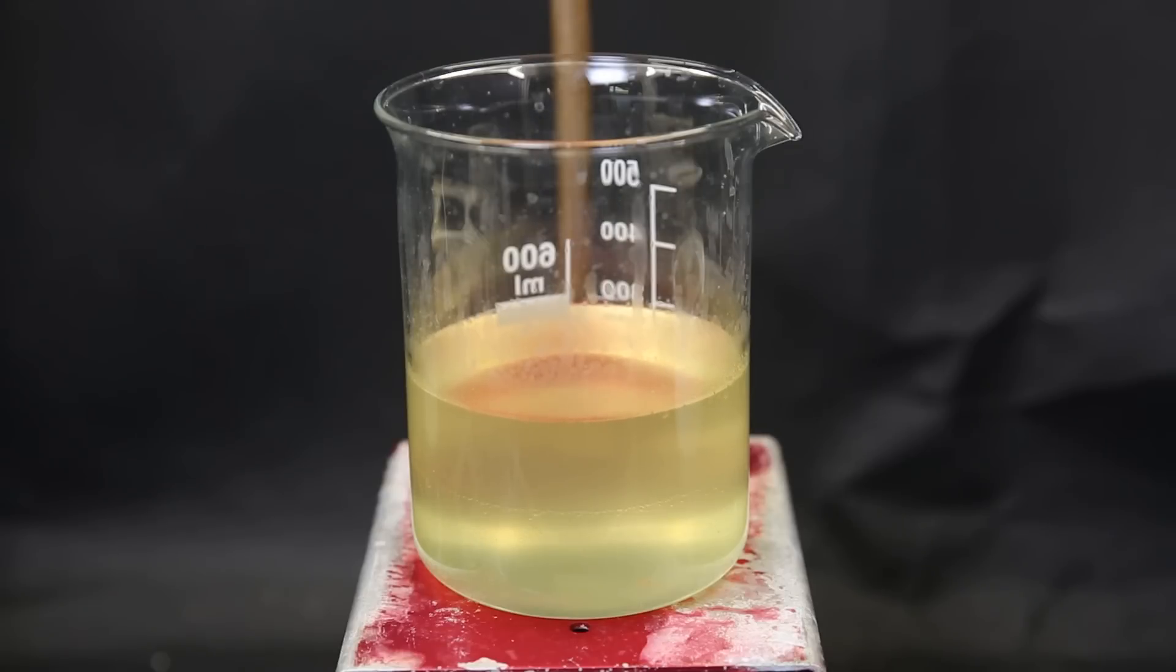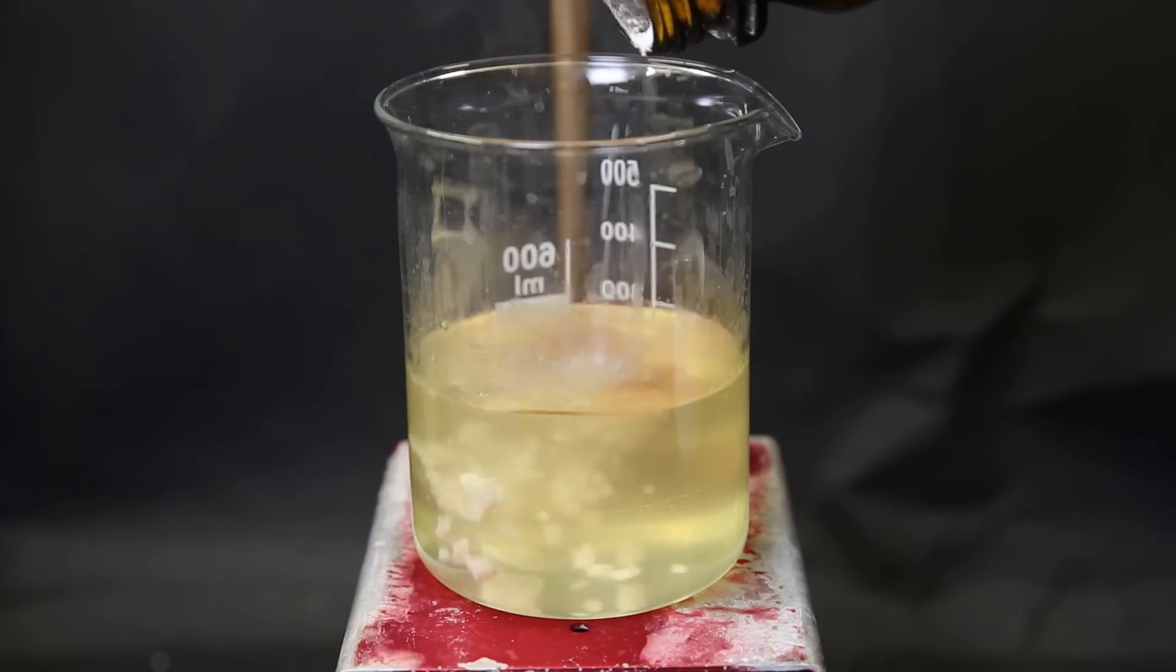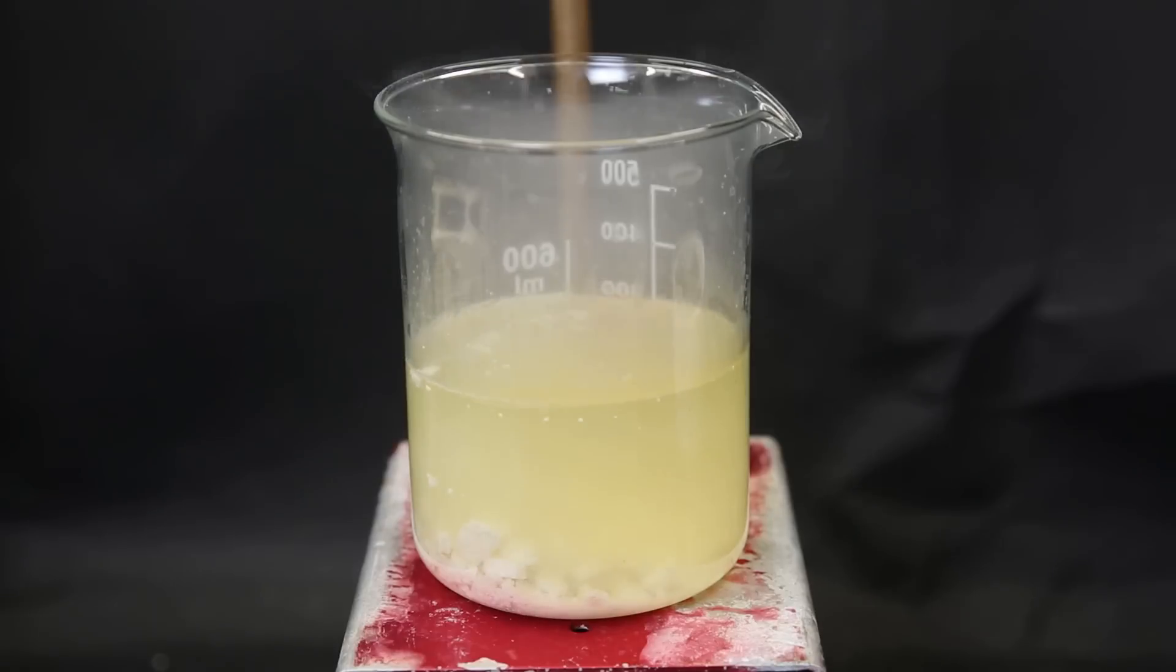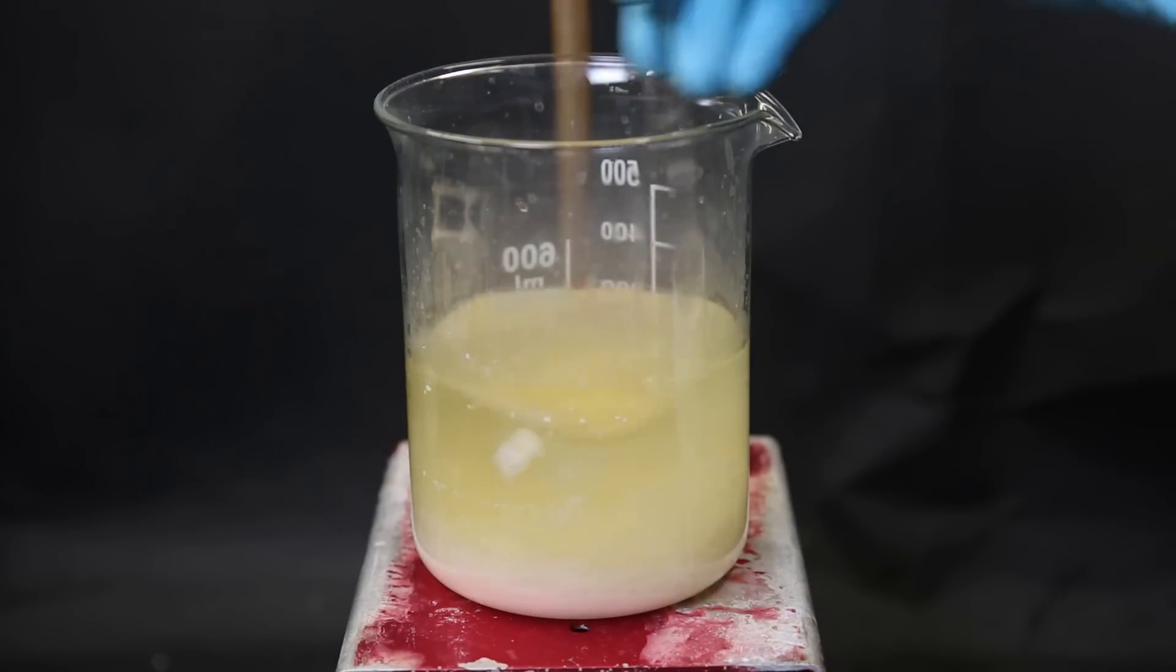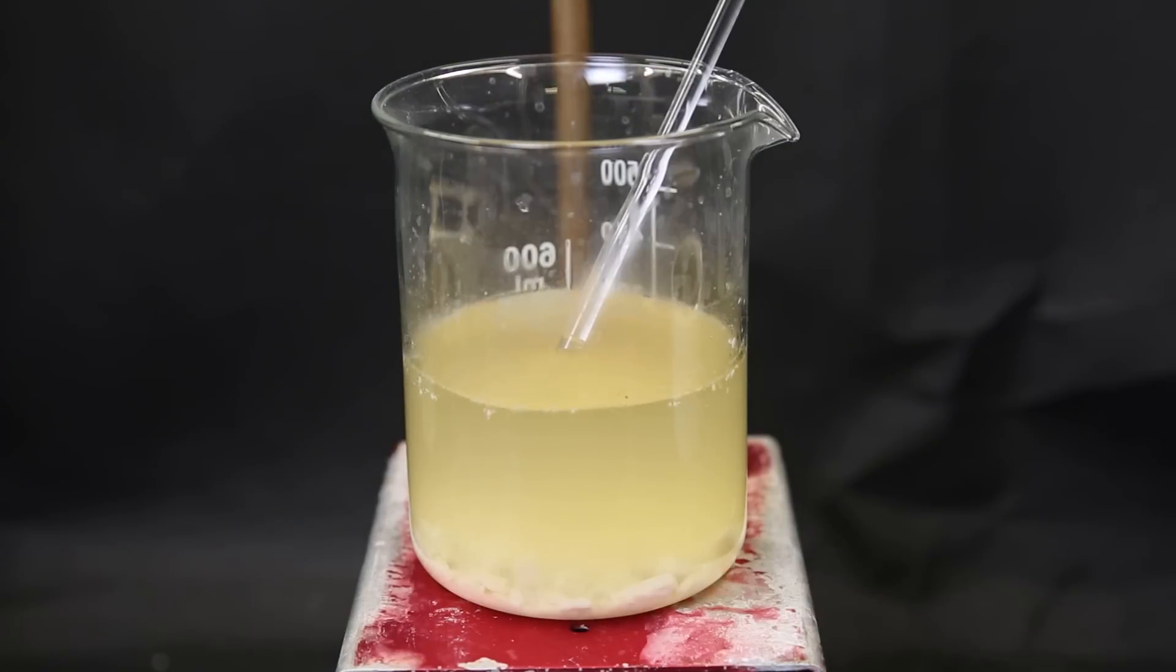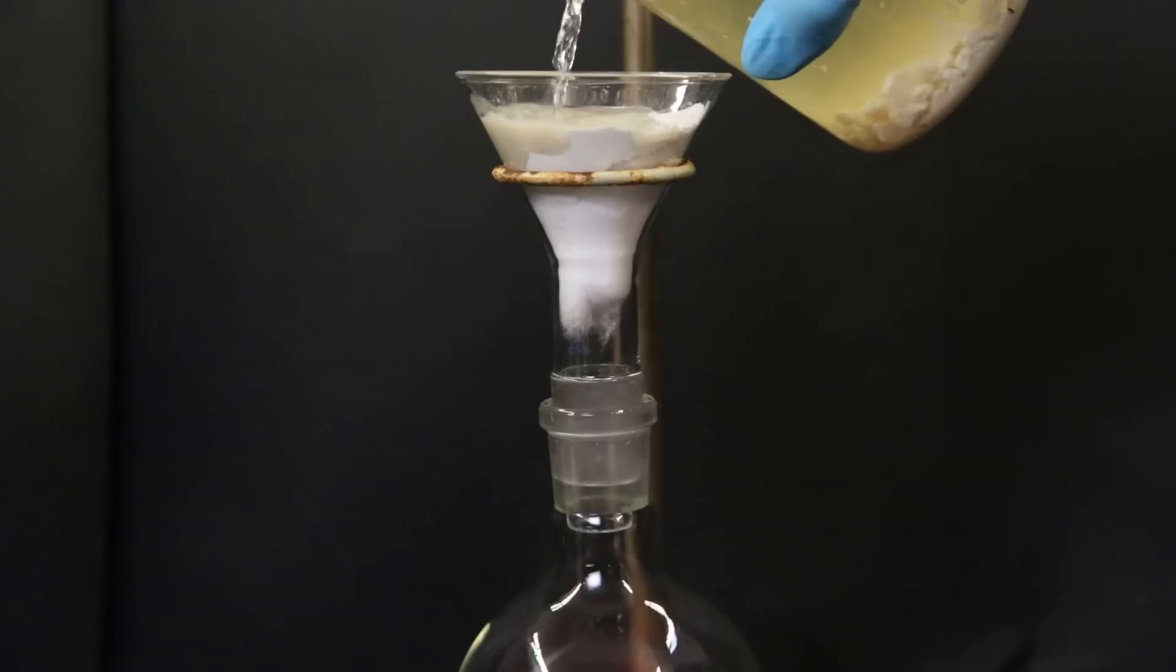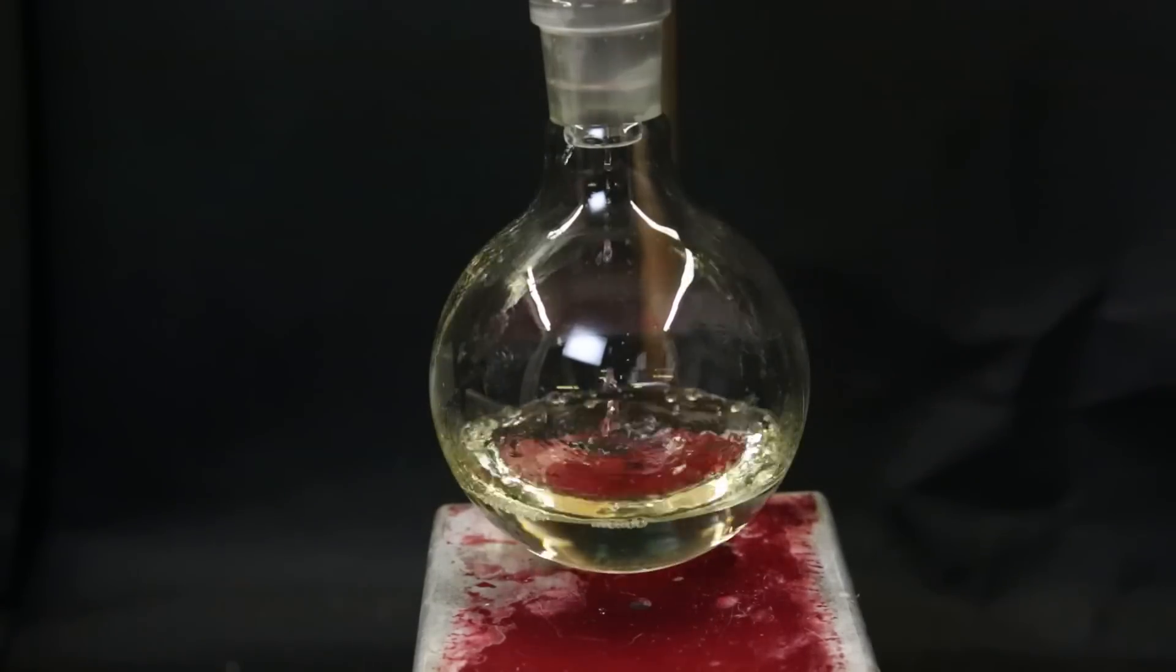Now to dry it, I will dump in a bunch of anhydrous magnesium sulfate. I stir the mixture and then let it sit for a while. After that, I filter the mixture through some cotton and celite, and I collect the now clear yellow solution.